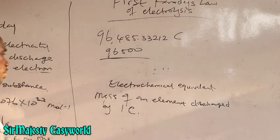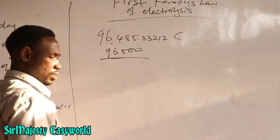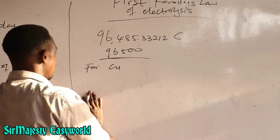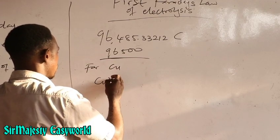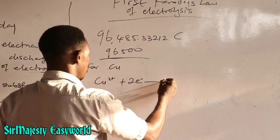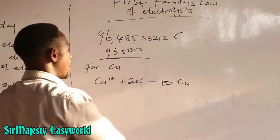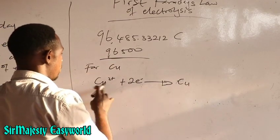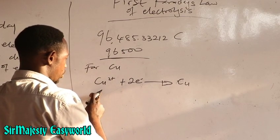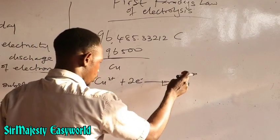Now we can find the electrochemical equivalent of each element. For copper, the charge present on copper(II) ion is +2, which means the copper(II) ion requires 2 moles of electrons to reduce it to copper metal. From the half-cell equation, gaining electrons means reduction, taking place at the cathode: Cu²⁺ + 2e⁻ → Cu. This represents 2 moles of electrons, and since 1 mole of electrons equals 1 Faraday, we replace 2e⁻ with 2F.